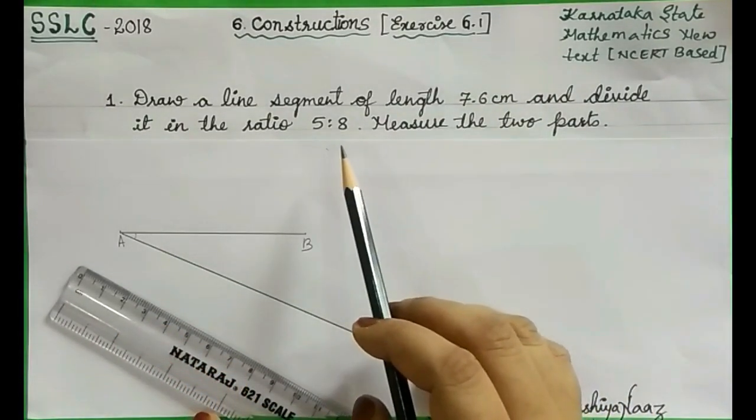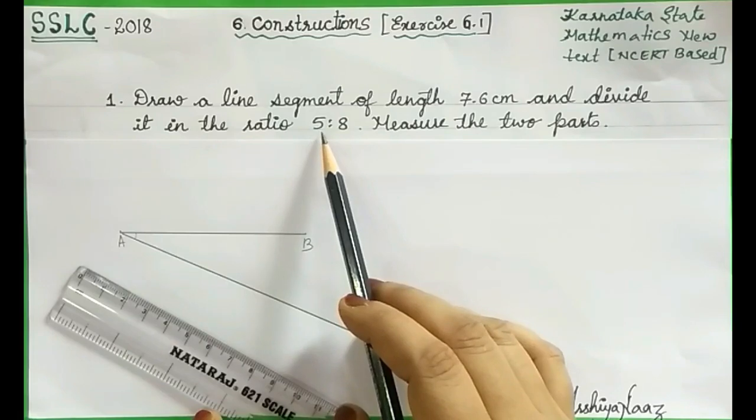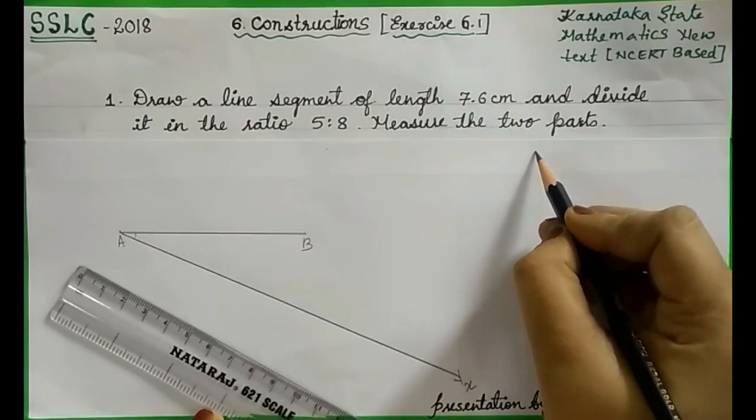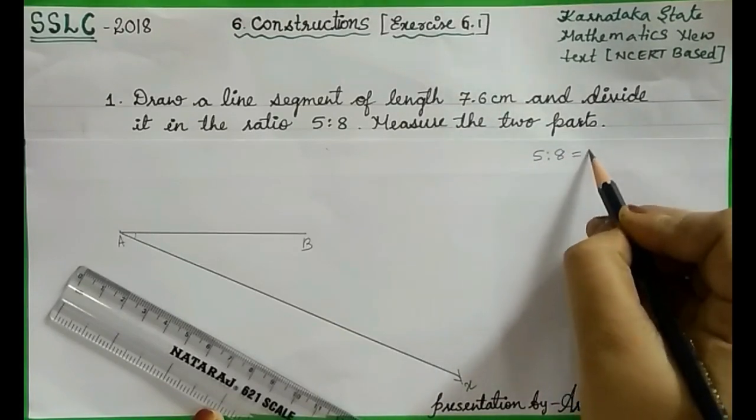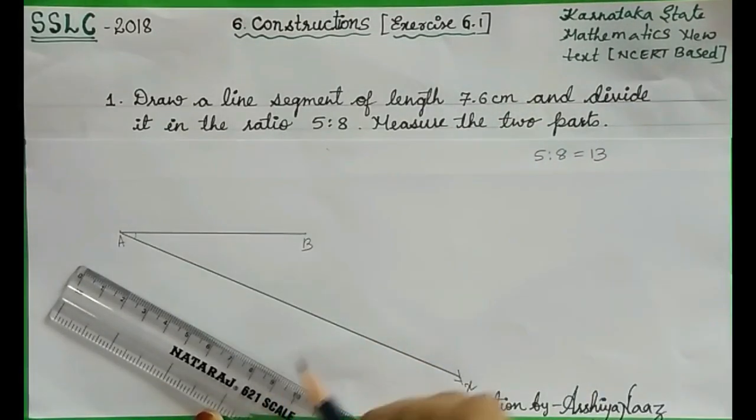Now, in the question, the given ratio is 5 is to 8. We have to add the ratio. Here we get 13.